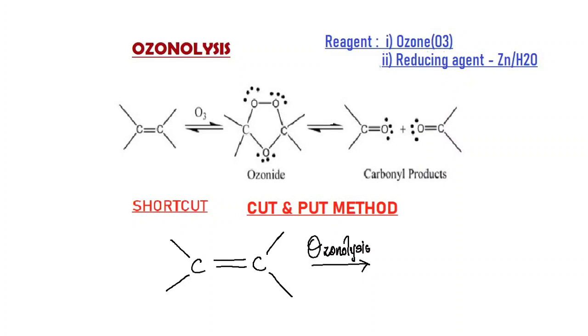The ozonolysis reaction and the corresponding mechanism is as shown. The reagent used for the reaction is ozone (O3) followed by a reducing agent, generally zinc and water (Zn/H2O). Alkene on treatment with ozone will give you a cyclic intermediate called the ozonide intermediate, which on treatment with the reducing agent will give you the corresponding carbonyl products.